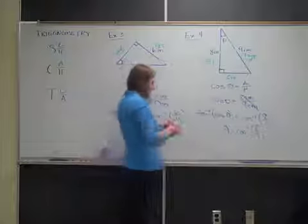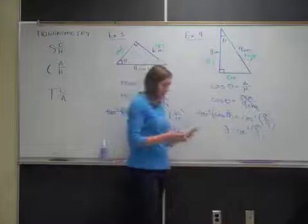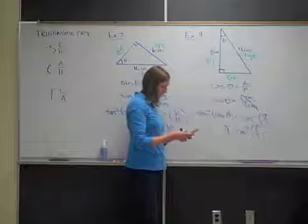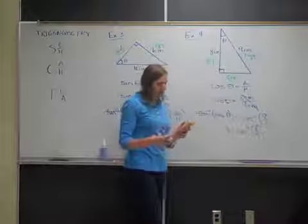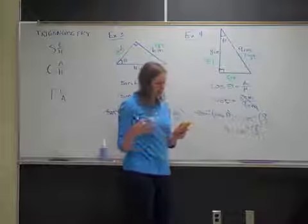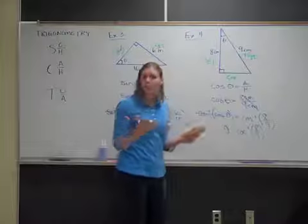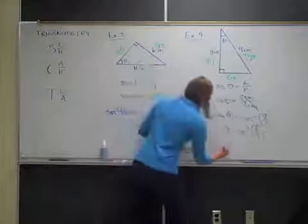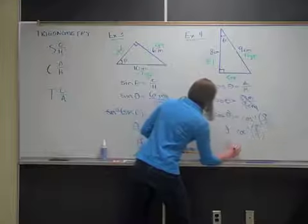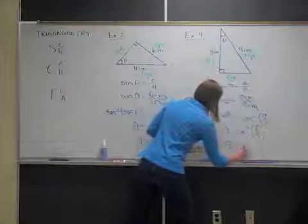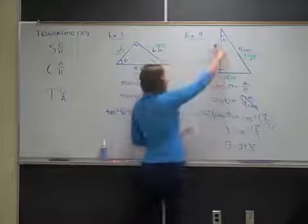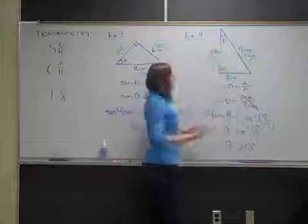It's just a matter of the calculator now. The inverse cosine of 8 ninths comes out to 27.266. Rounding to the nearest tenth, that's 27.3 degrees. So that would be the measure of this angle, 27.3 degrees.